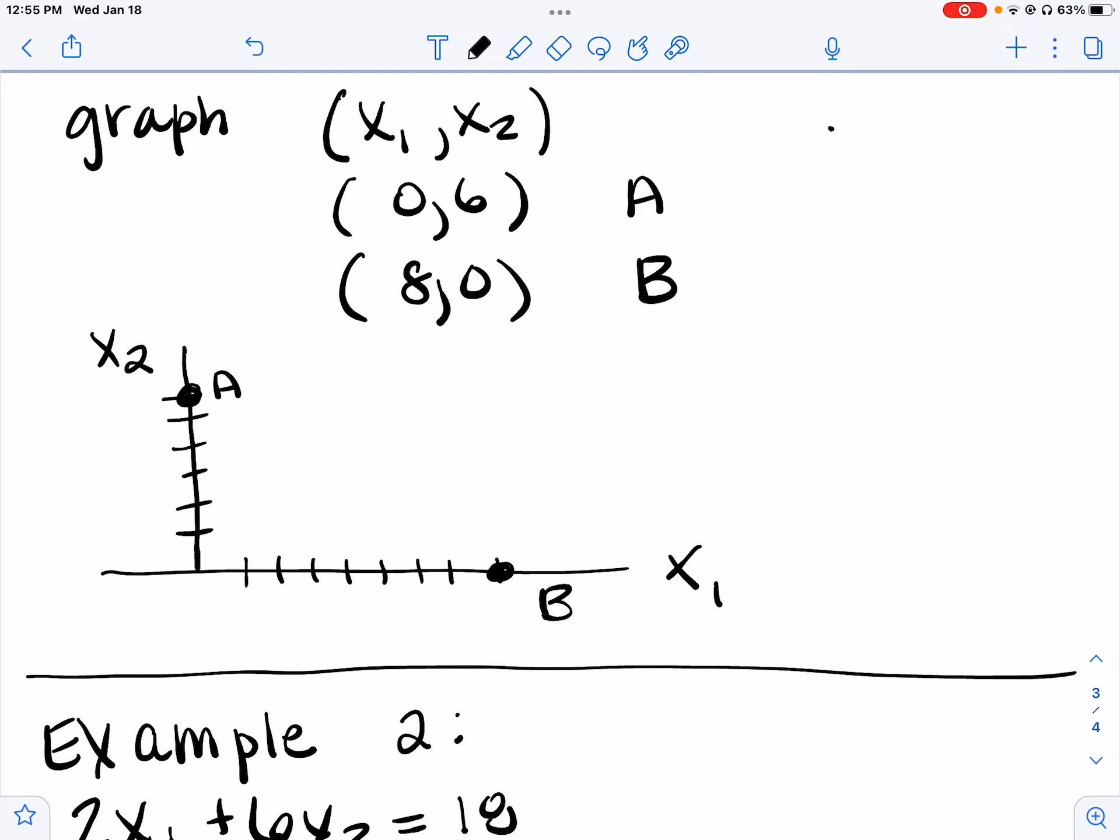Okay, so x1 is positive, so we'll go right for that. x2 is positive, so we'll go up for that. So point A, 0, 6 means go over 0 and up 6. Point B, 8, 0 means right 8, up 0.